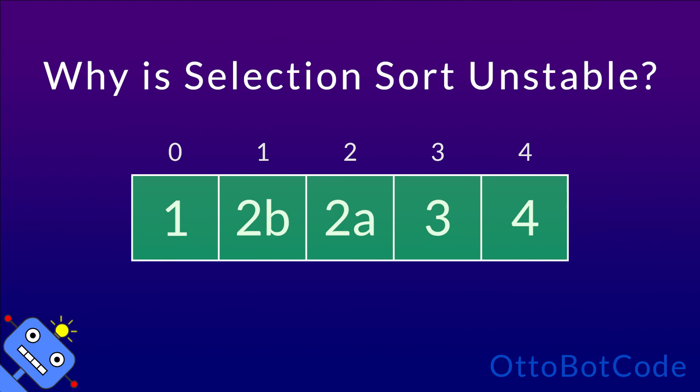We have found an example which shows that selection sort is not stable. Thanks for watching. If this video helped you, then leave a like and subscribe for more.